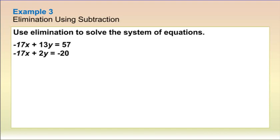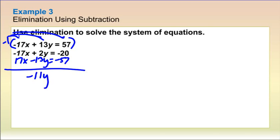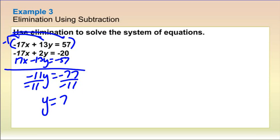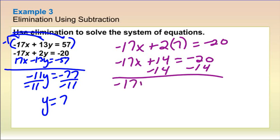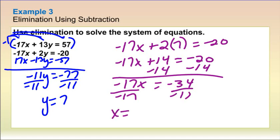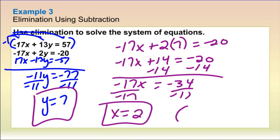Next subtraction example: multiply the top equation by negative 1 and distribute, giving 17x minus 13y equals negative 57. Add straight down: negative 11y equals negative 77. Divide by negative 11: y equals 7. Pick the bottom equation to solve for x: negative 17x plus 2 times 7 equals negative 20, giving negative 17x plus 14 equals negative 20. Subtract 14 on both sides: negative 17x equals negative 34. Divide by negative 17: x equals positive 2. Ordered pair: (2, 7).